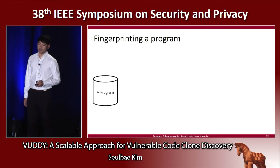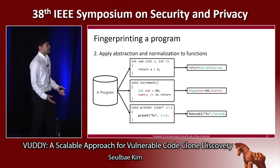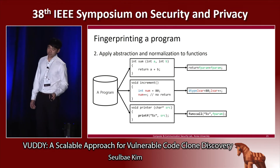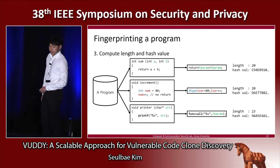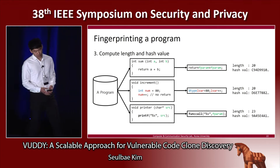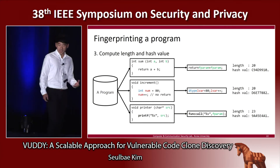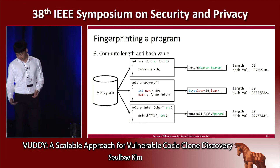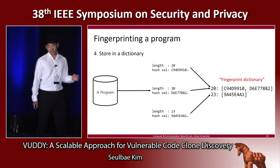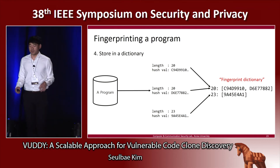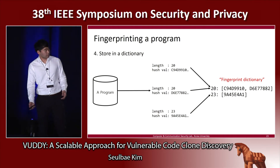Now let's see how we fingerprint the program. First, we retrieve all functions from a program — let's say this program consists of three different functions. We then apply abstraction and normalization to the retrieved functions. To the resulting strings after abstraction and normalization are applied, we calculate the length and hash values. We store everything in a dictionary using the length values as keys and the corresponding hash values that share the same key as a list mapped to those keys. That's the exemplary fingerprint dictionary.